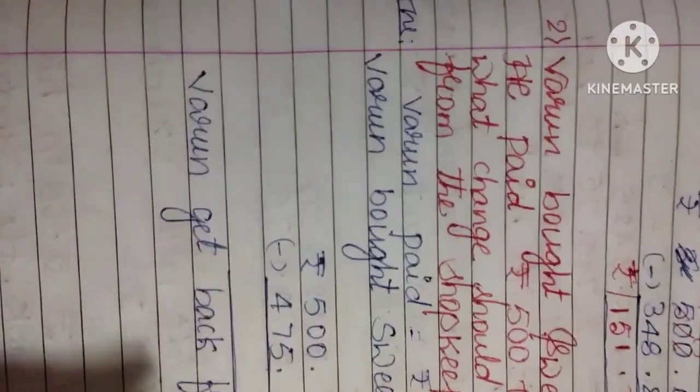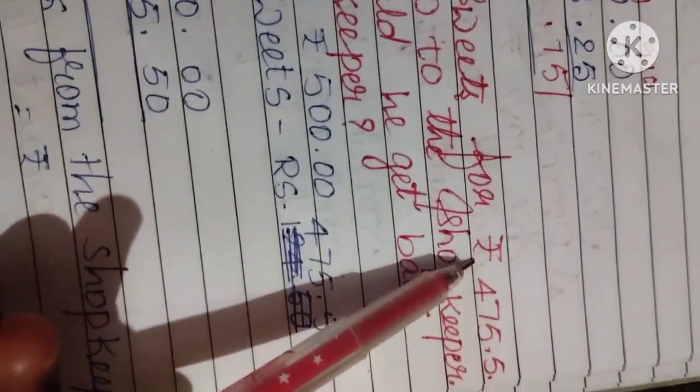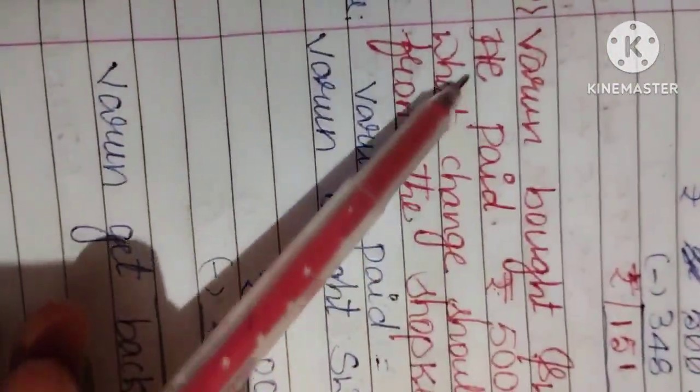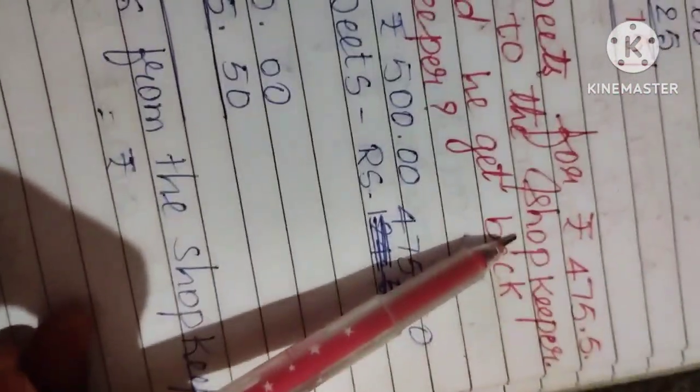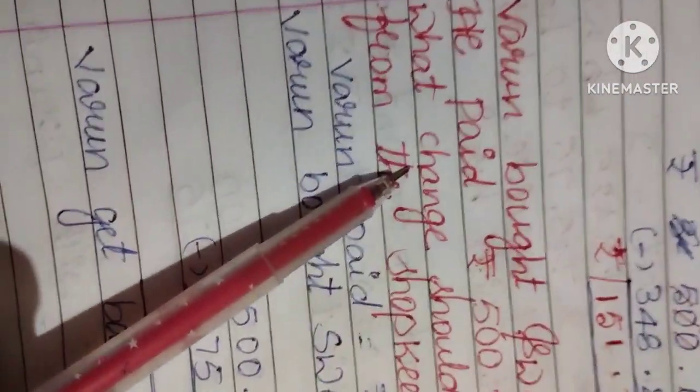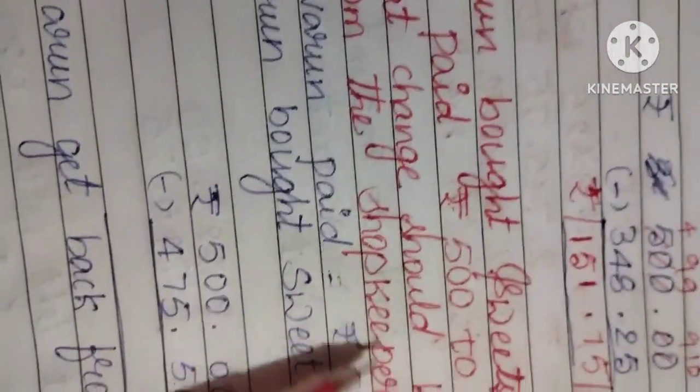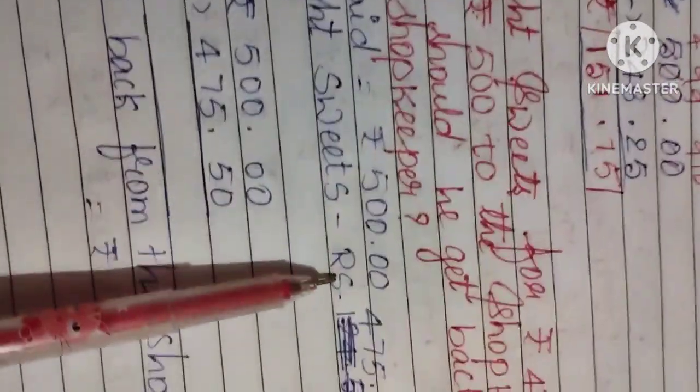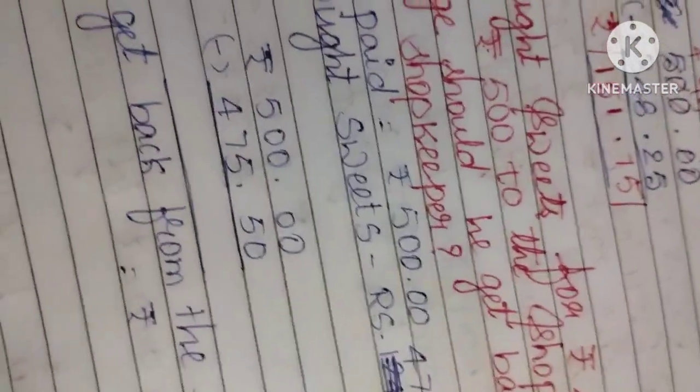Next, we have second question. Varun bought sweets for Rs. 475.50. He paid Rs. 500 to the shopkeeper. What change should he get back from the shopkeeper? So you can write, see here, Varun paid Rs. 500. Varun bought sweets Rs. 475.50. You can do now.